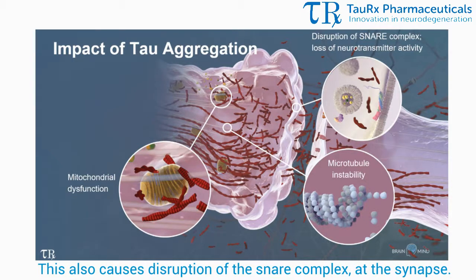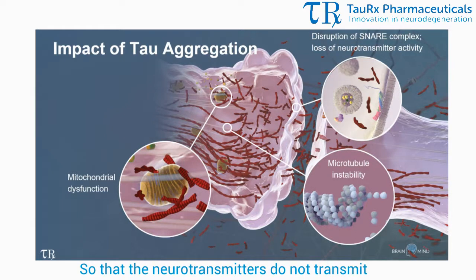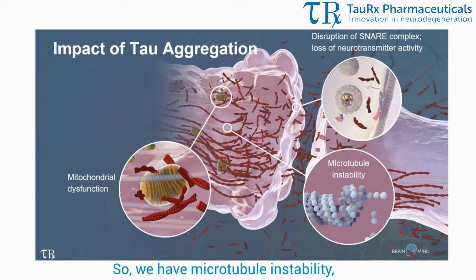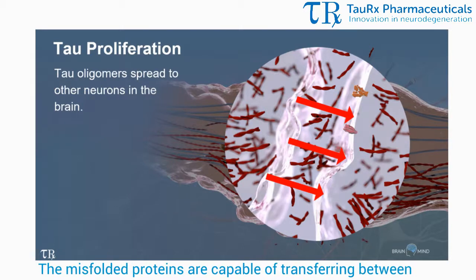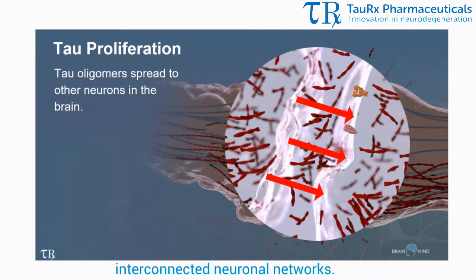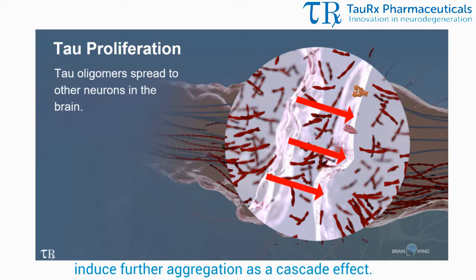This also causes disruption of the SNARE complex at the synapse so that the neurotransmitters do not transmit across the synapse as they normally would. So we have microtubular instability with loss of function and eventually no function. Tau also spreads within the brain — the misfolded proteins are capable of transferring between interconnected neuronal networks, and this can act as a template to induce further aggregation as a cascade effect.